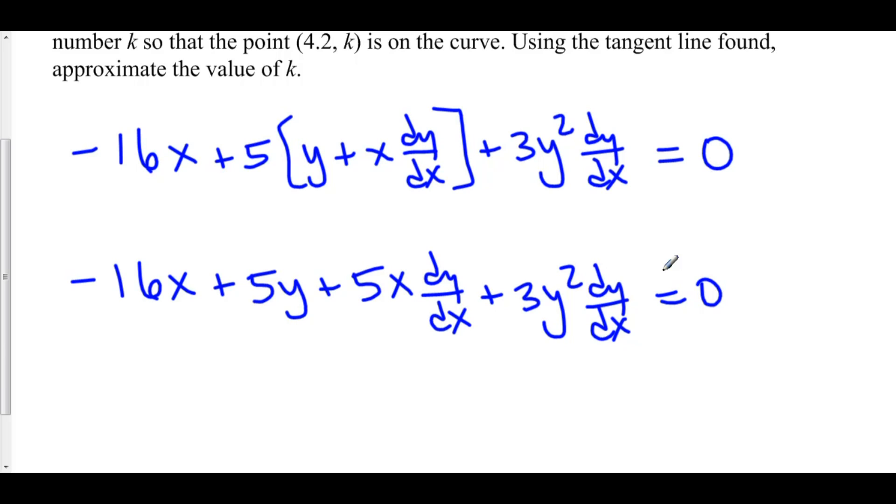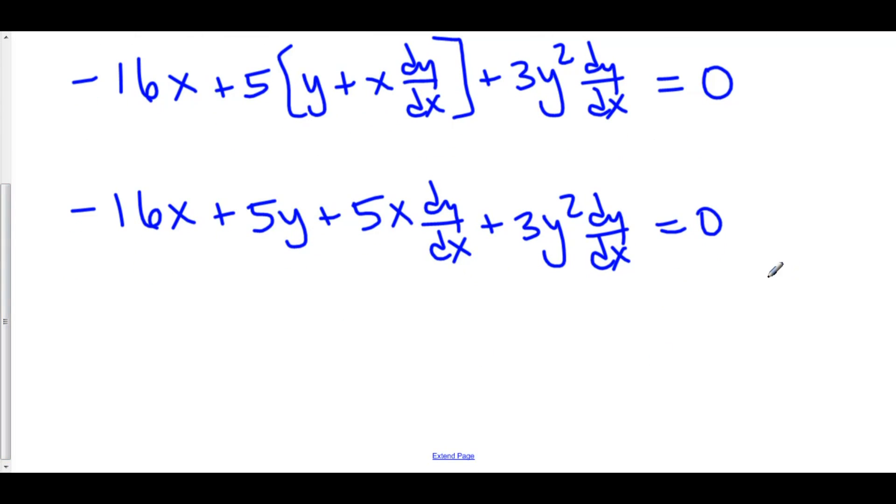Now let's move everything that doesn't have a dy dx to the right hand side. And we'll also factor out the dy over dx on the left hand side. So here we have dy over dx times 5x plus 3y squared.